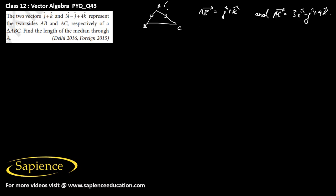If we take the coordinate of point A as (0,0,0), then the vector AB will be the position vector of point B, so B will be (0,1,1) and point C will be (3,-1,4). It is asked to find the length of the median through point A.